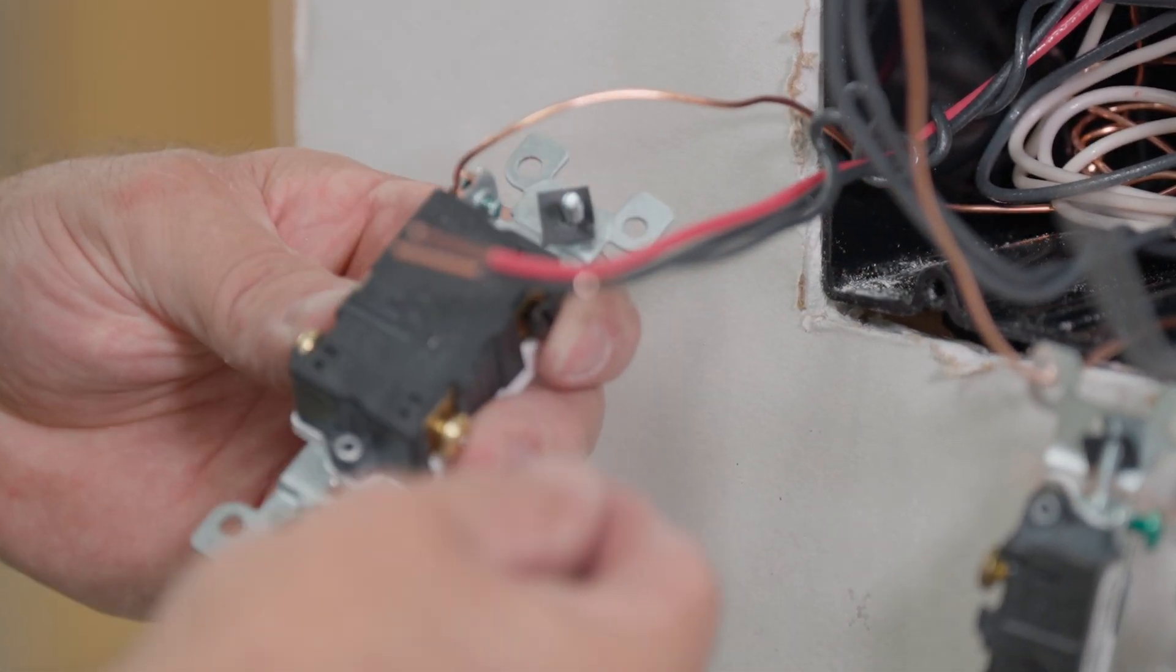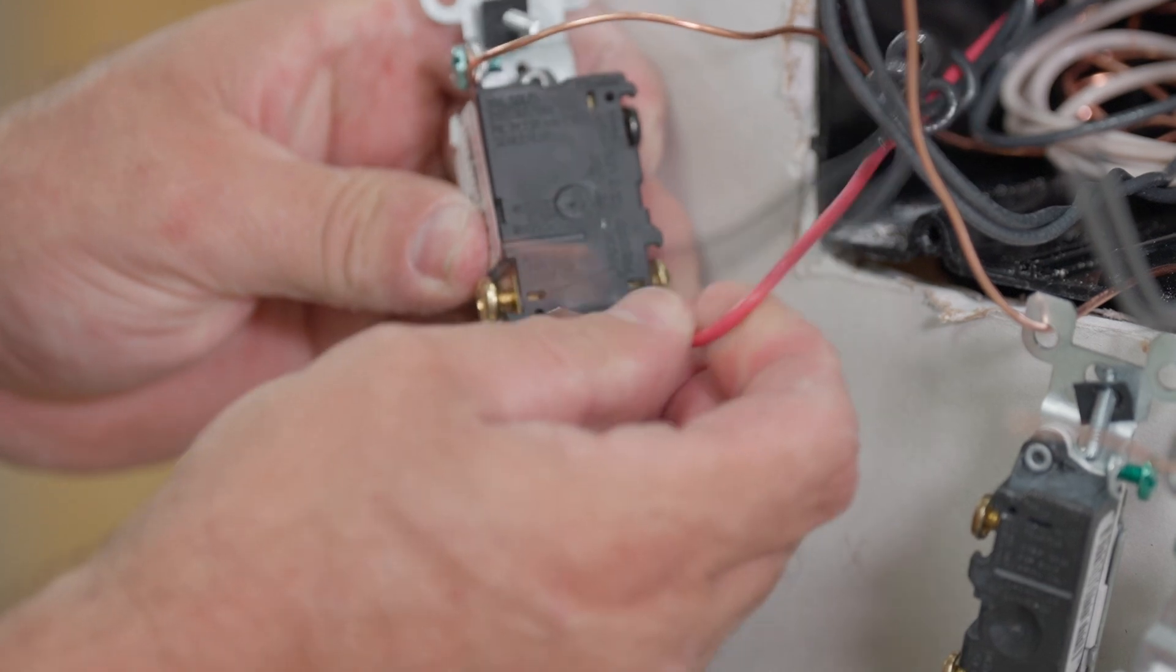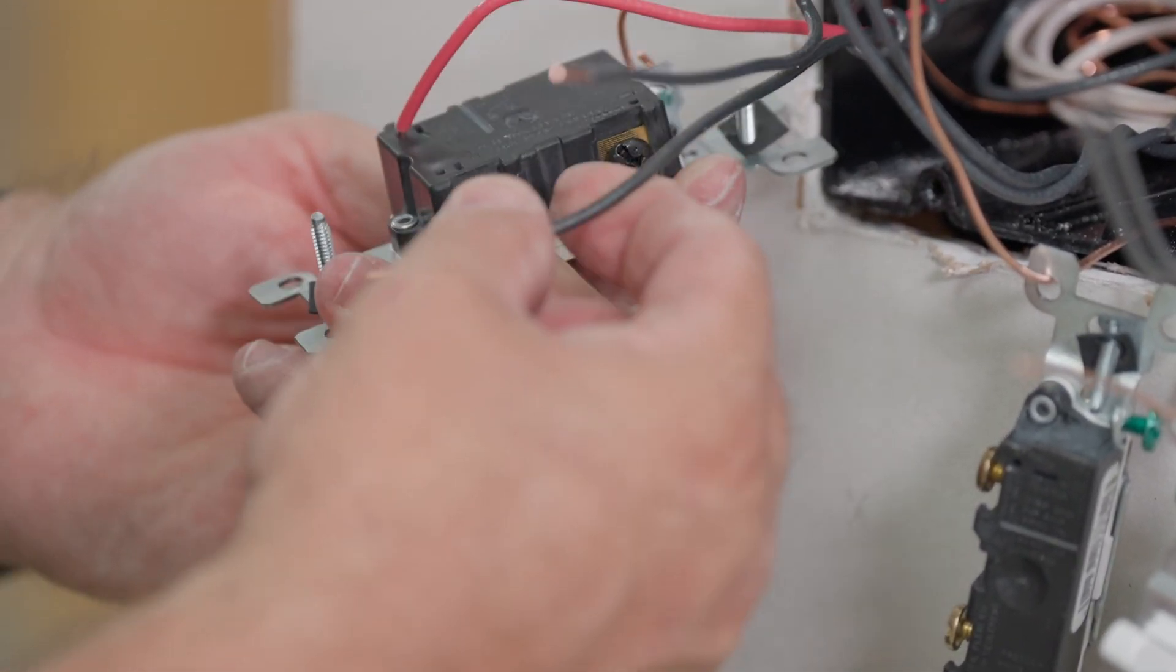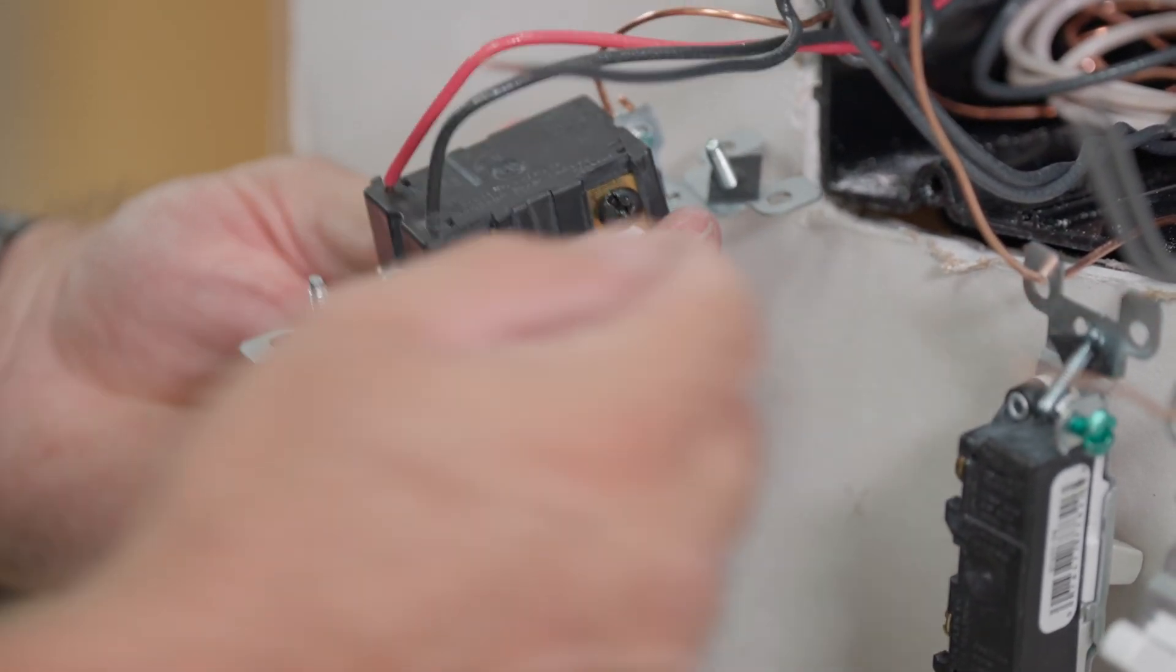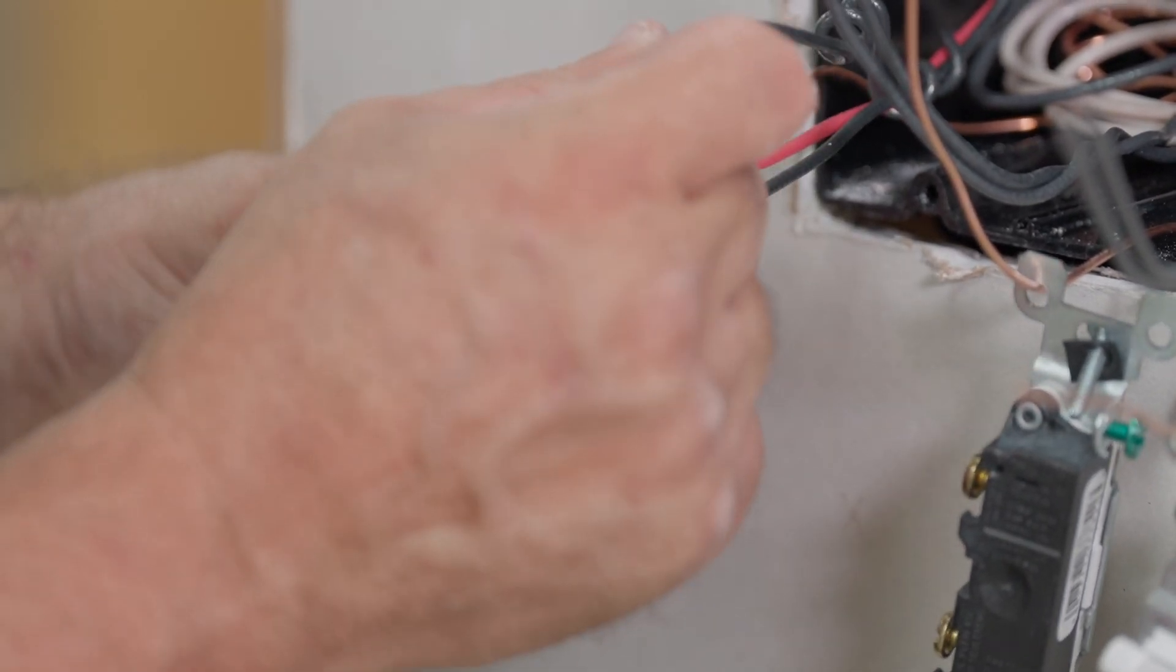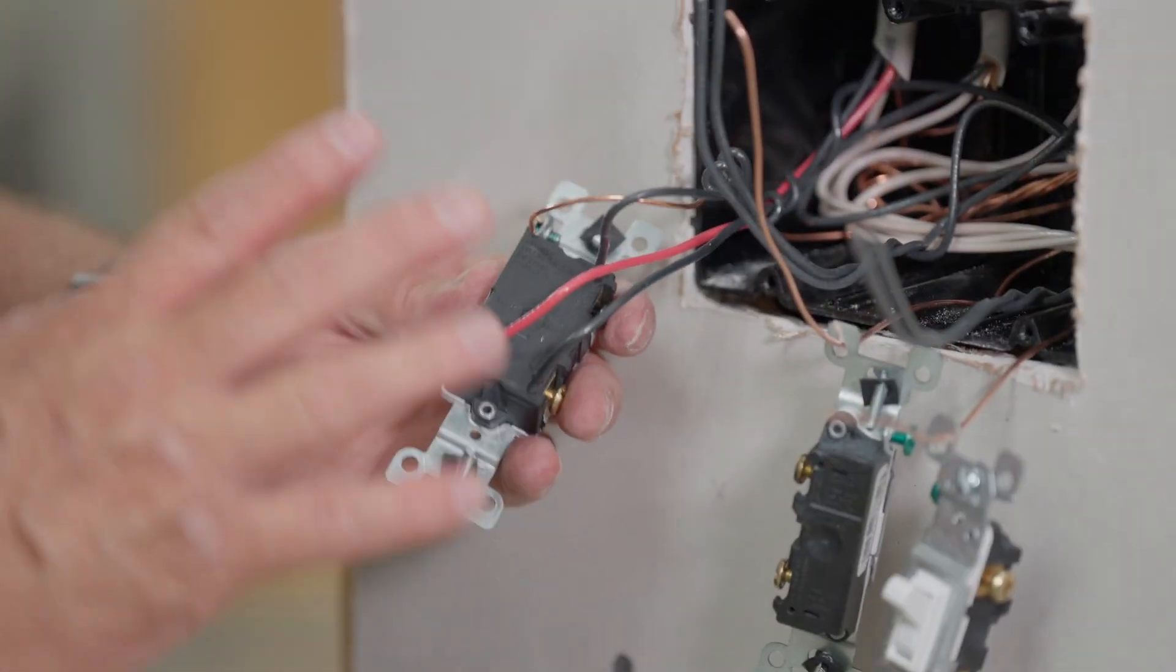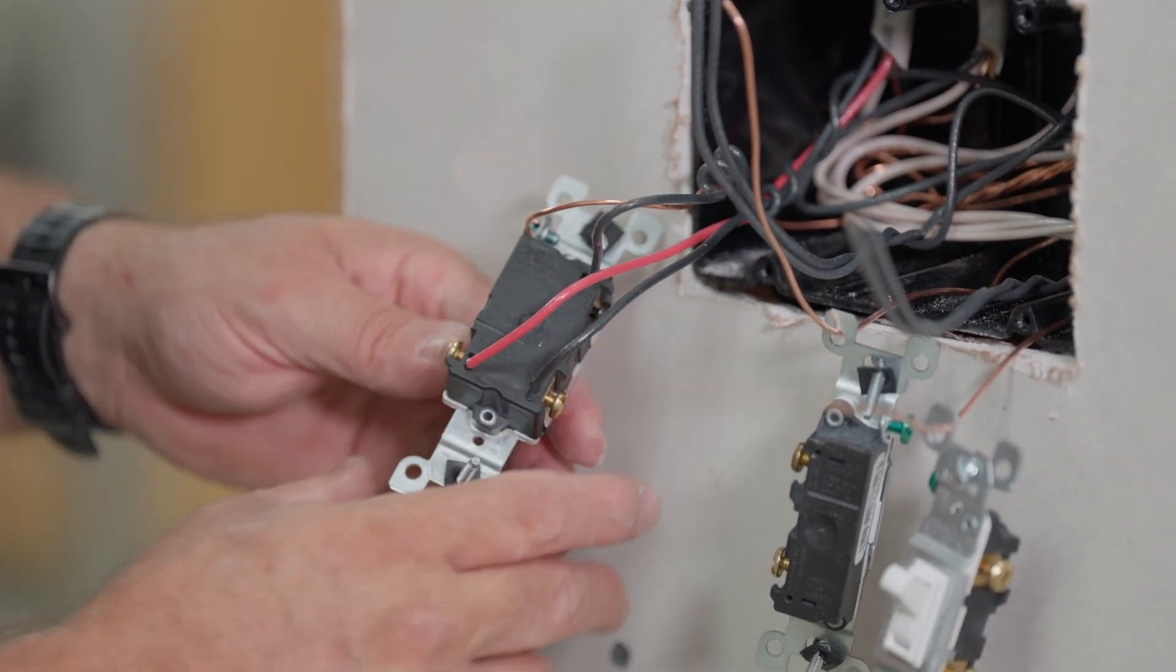So what we'll do first is here's the terminal here. We'll put one of the travelers and push it in the back just like that. And then here is the other traveler. It's brass. We'll push it right in the back. And then here's the black common. Make sure you get this right. This is the biggest mistake people can make when wiring a three-way switch. You got to make sure the common is in the right place and the traveler is in the right place.